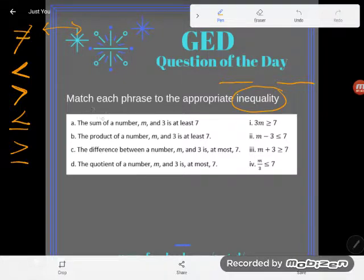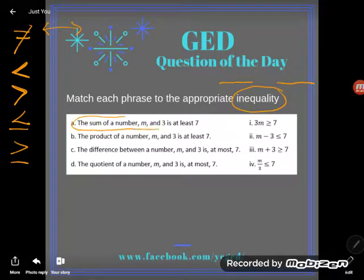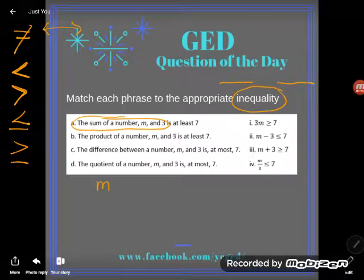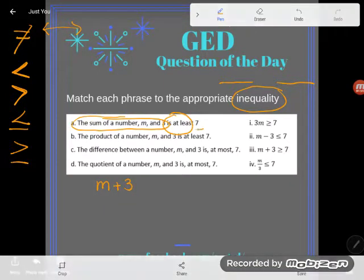So let's go ahead and take a look. A says the sum of a number M and 3. Let's start with this phrase, the sum of a number M and 3. So sum means the answer when you add. So what are they telling us? They're telling us to add some number M and 3. And I see that it is at least 7.